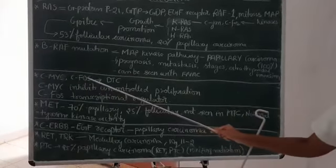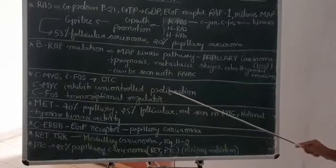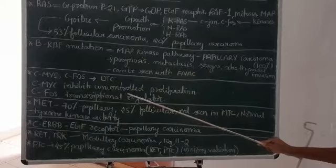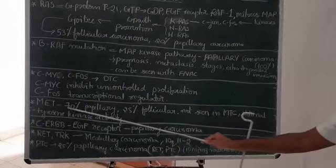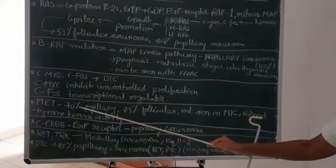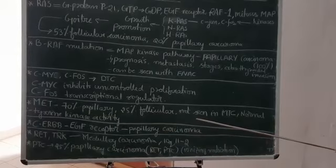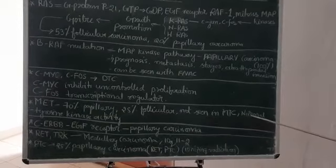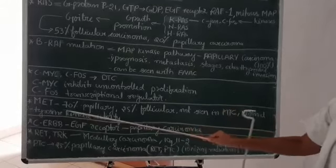C-MYC and C-FOS genes lead to differentiated thyroid carcinoma. C-MYC causes uncontrolled proliferation, while C-FOS acts as a transcriptional regulator. C-MYC is associated with 70% of papillary carcinoma and 20% of follicular carcinoma, but is not seen in medullary carcinoma. Normal C-MYC has tyrosine kinase activity.